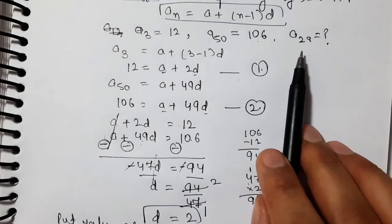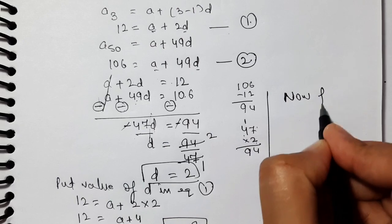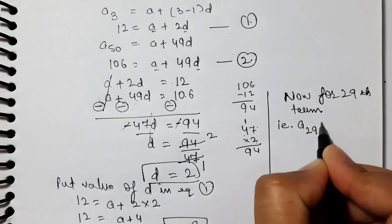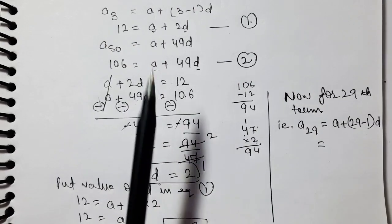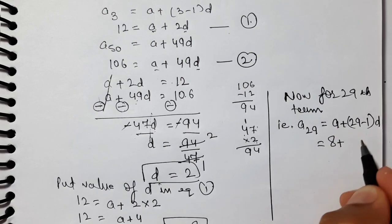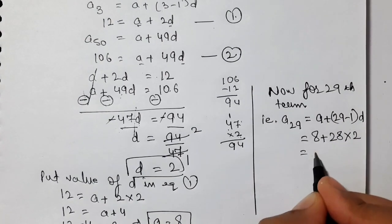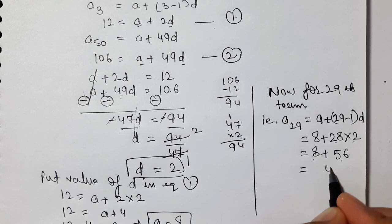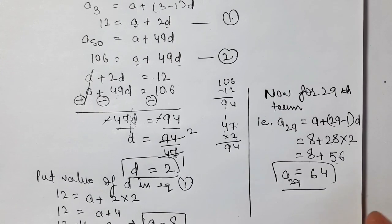Now, we need to find the 29th term. For the 29th term: A29 = A + (29−1) × D = 8 + 28 × 2. That is 8 + 56 = 64. So the 29th term is 64. That completes question 8. Now let's do question 9.